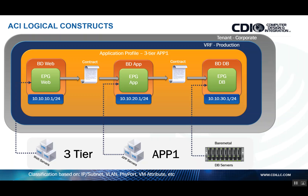Because ACI is based on a zero-trust model, these EPGs have no communications between each other by default. So you need to create something called a contract, which can be considered a glorified access list — but we're not creating access lists based on traditional five-tuple, where you define source and destination IP, source and destination port, and protocol. In ACI, we define the EPGs in place of the source and destination IP addresses, and we configure something called a filter within the contract, which represents the ports and protocols allowed between the endpoint groups. With this approach alone, you can harden your applications within the data center and only allow the communication that's permitted.